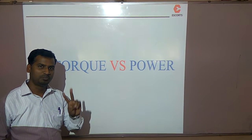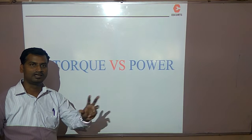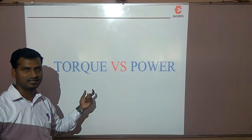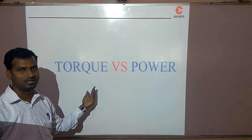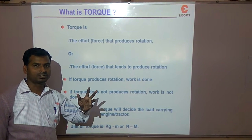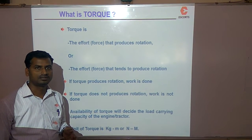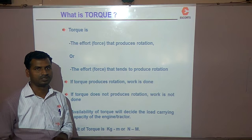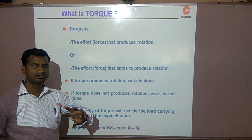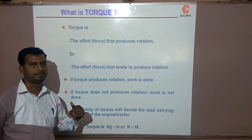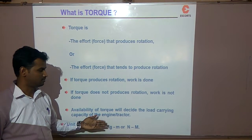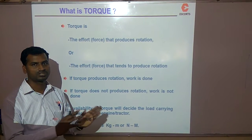Let us understand two performance terms generally used while describing engine or tractor performance: torque and horsepower. Let us start with torque. Torque is the rotating force, or the twisting force. If the twisting force is able to rotate, work is done. So torque is the ability of doing work. The units for torque are kilogram-meter or Newton-meter — force into distance.